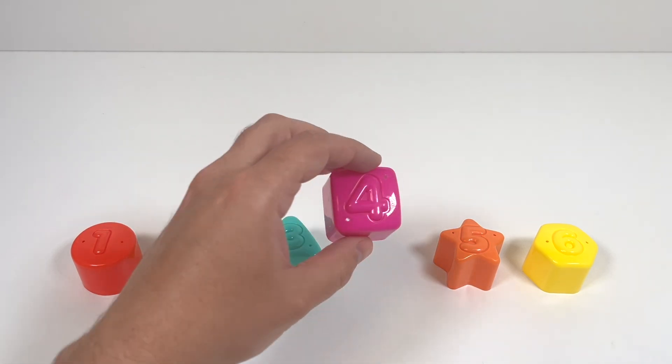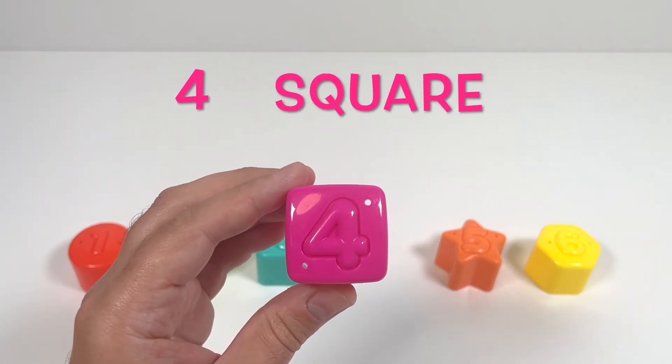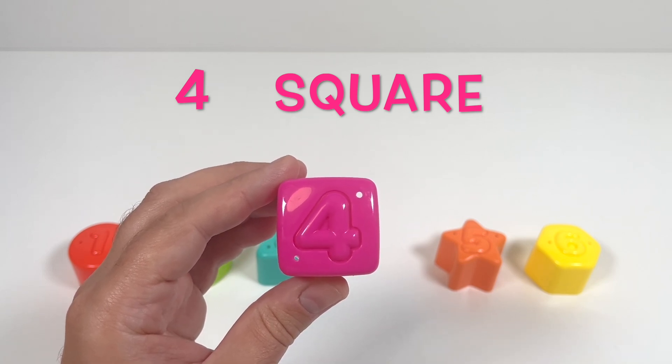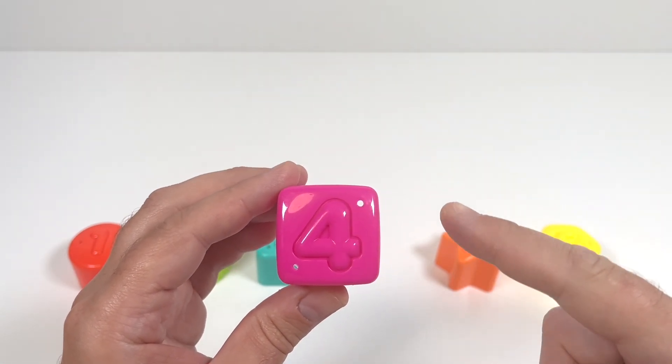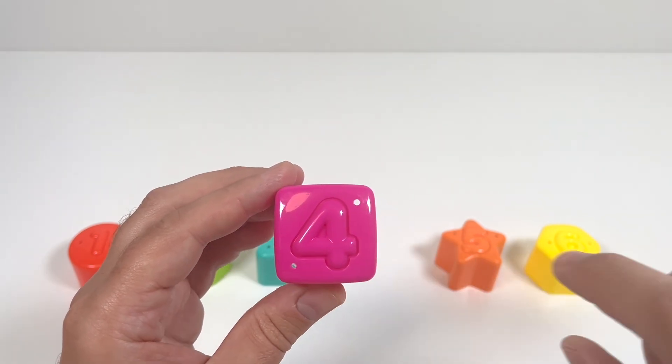Number 4 is a pink square. A pink square. And squares have four sides. One, two, three, four. A pink square.